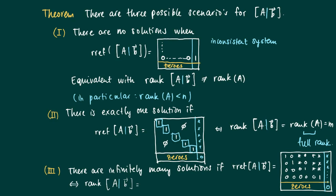In this case, the rank of the augmented matrix A|B equals the rank of A, since the last column does not get a pivot. We also have that the rank is smaller than m — not every column gets a pivot, so some columns have no pivot. The number of free variables equals the number of columns in A — that is, m columns for an n times m matrix — minus the rank, i.e., the number of leading pivot elements in A.